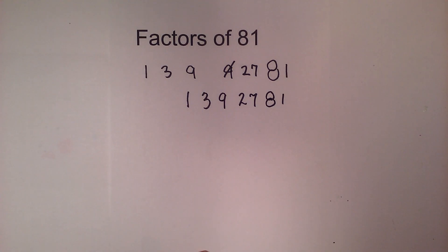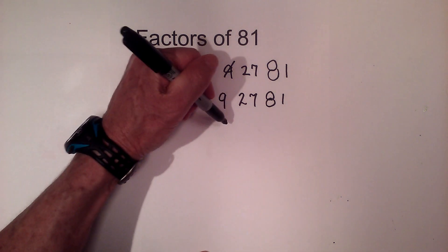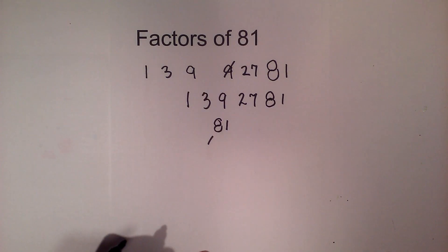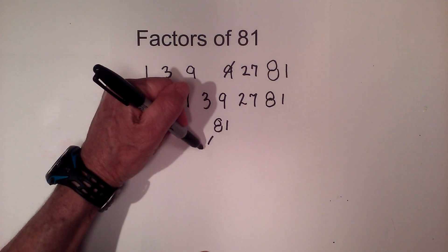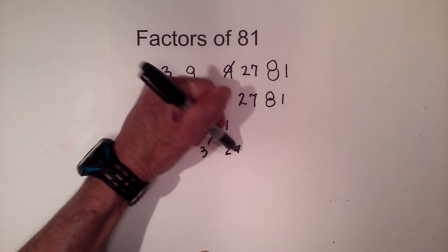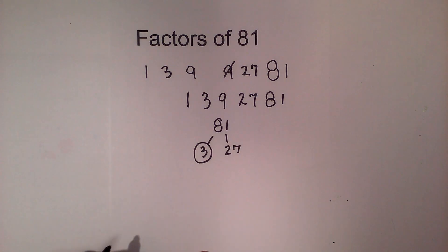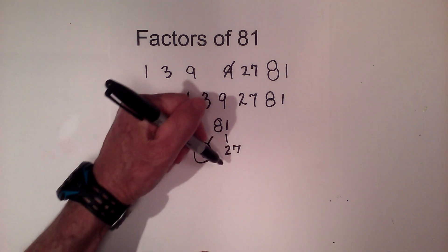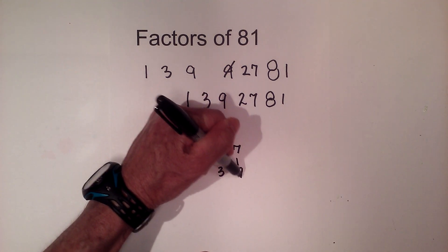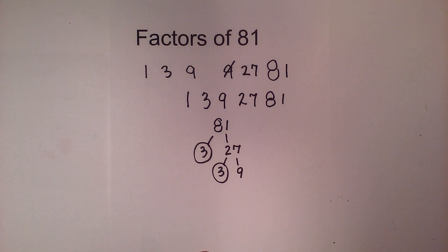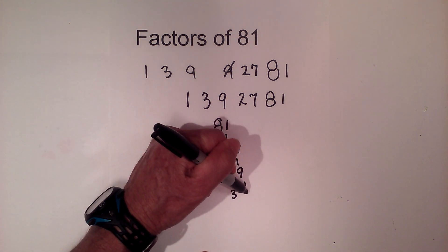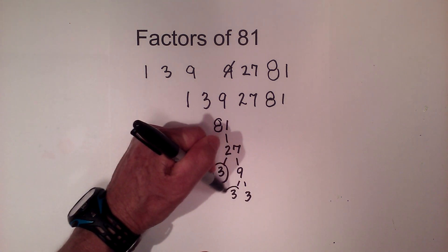Now let's find the prime factors of 81. I'm going to write 81 and begin with 3. 3 times 27 equals 81 — circle the 3 because it is prime. 3 times 9 is 27 — circle the 3 because it is prime. And now 3 times 3 is 9.